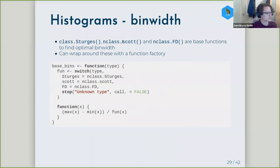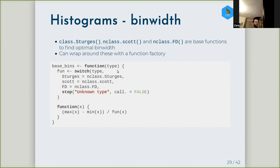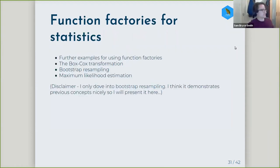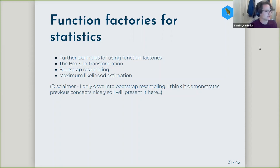They showed another example where there are actually some base R functions to try and find the optimal bin width for a histogram. You could do something similar and wrap around picking these different methods with a function factory — so you'd just provide `type` as your argument to the factory, which would be one of Sturges, Scott, or FD, and then it would call the function as needed. Another application laid out in the chapter was using function factories for statistical approaches.